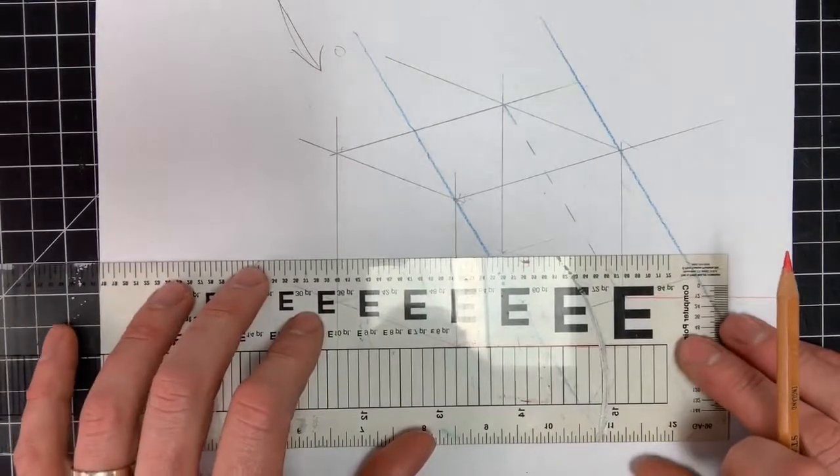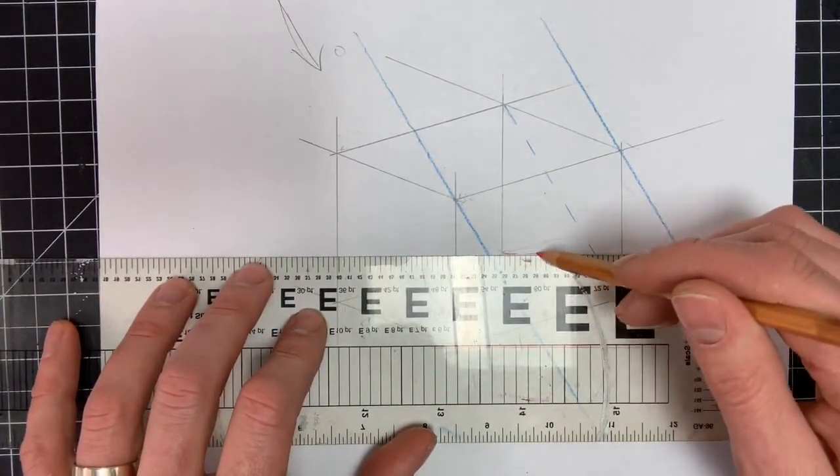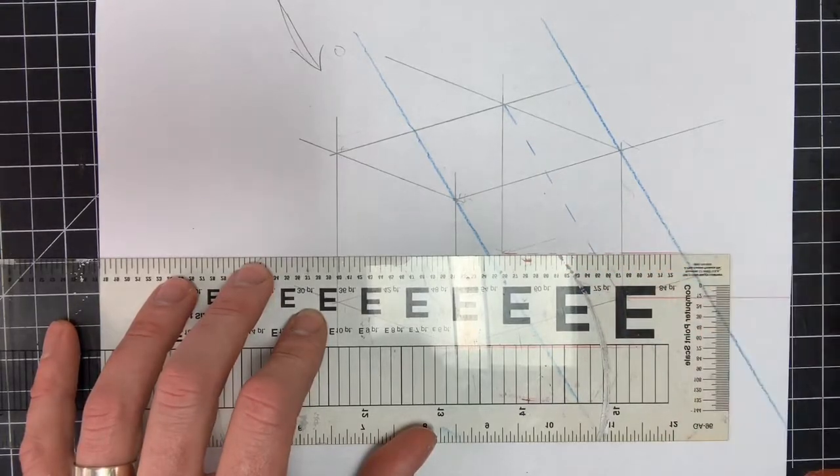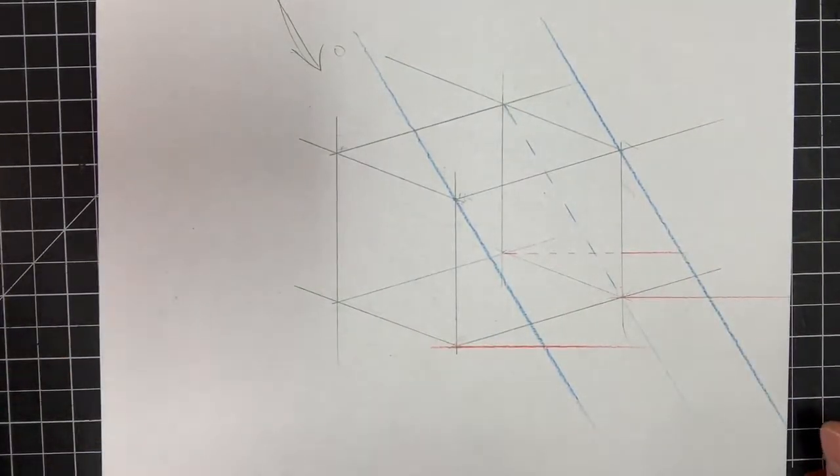And then what I'm going to do is I'm going to make a horizontal line coming from that back corner, but I'm going to make the line broken so you can kind of know that that's transparent. And then when it comes out, I'll keep it straight or continuous.